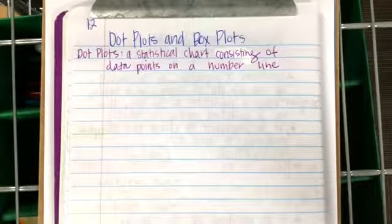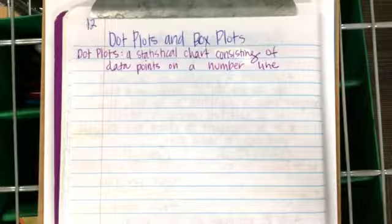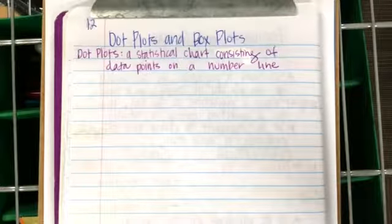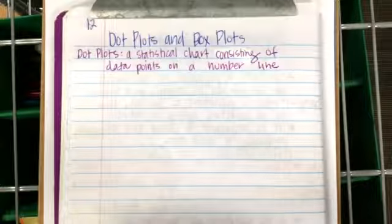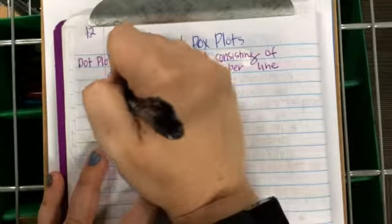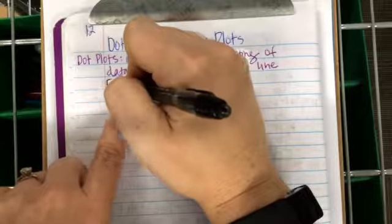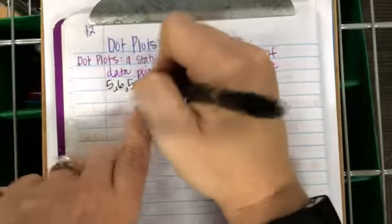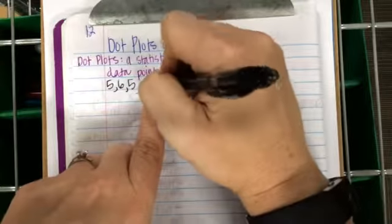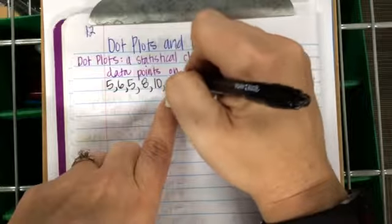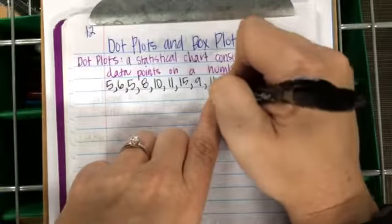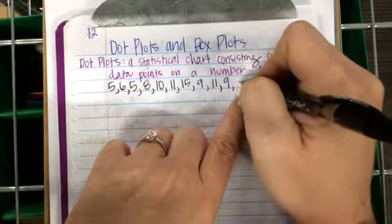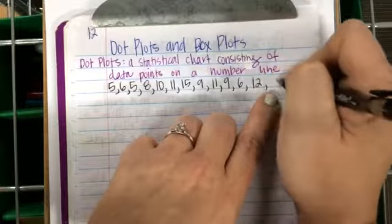So instead of being about favorite t-shirt color, we're dealing with quantitative, numerical data. I'm going to give you some data and we're going to create a dot plot. The data is: 5, 6, 5, 8, 10, 11, 15, 9, 11, 9, 6, 12, 11.